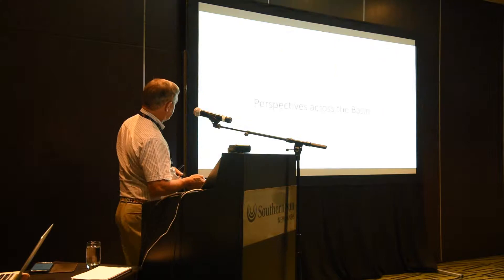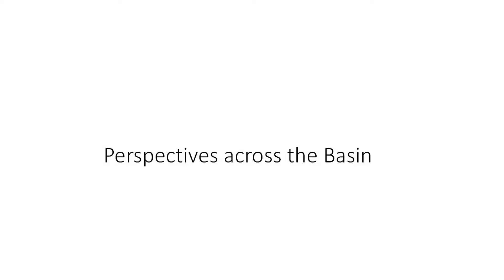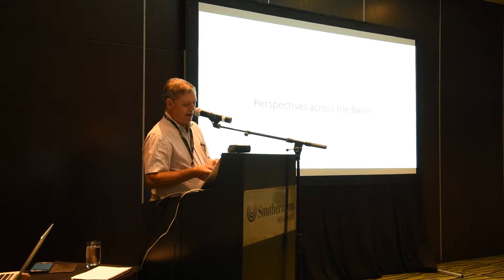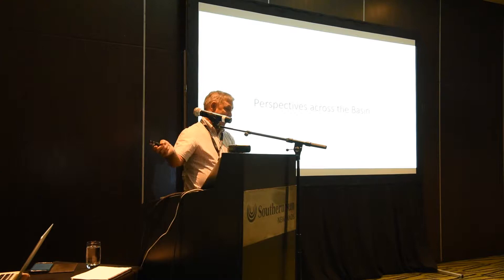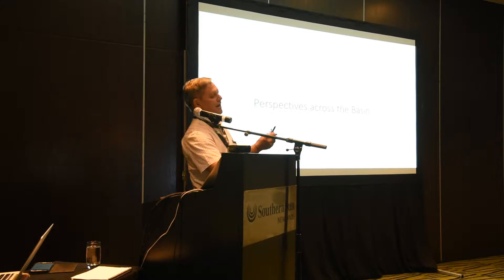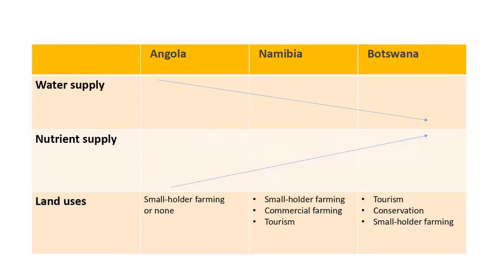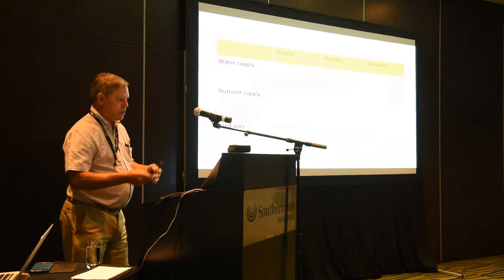The basin is shared between three countries. Almost all the water essentially comes from Angola, passes through Namibia, and goes on to the delta. I characterize Namibia's perspective as: we see the water coming in, and we see it go out at Mohembo, and we think, what a waste — we should just be keeping all of this water. More seriously: water supply waxes as you go downstream, so in Angola there's lots of water and Botswana is a more arid area. Nutrient supplies, conversely, are low in Angola and increase going downstream.